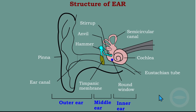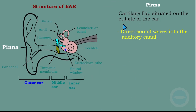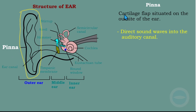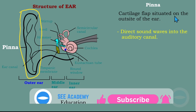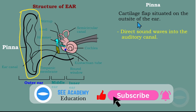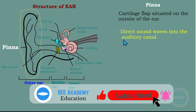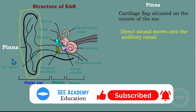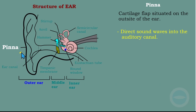Let's start with the pinna. The pinna is the part that we see outside the ear. It's a cartilage flap situated on the outside of the ear. Its function is to direct sound waves into the auditory canal. As the sound waves move around, the pinna traps the sound and directs it to the auditory canal or ear canal.